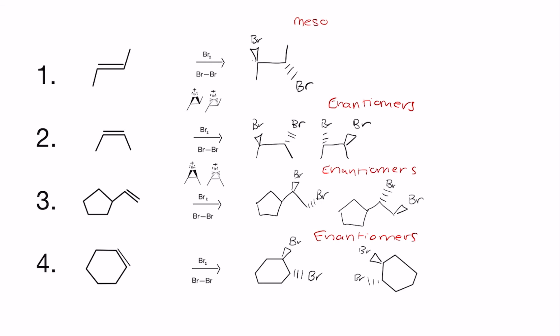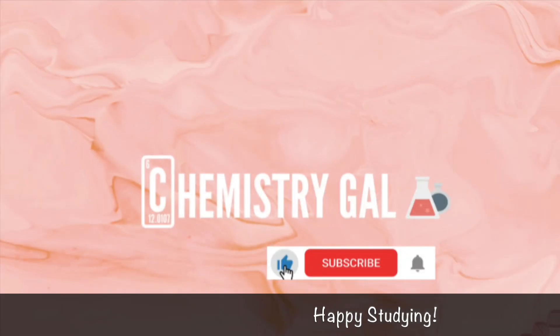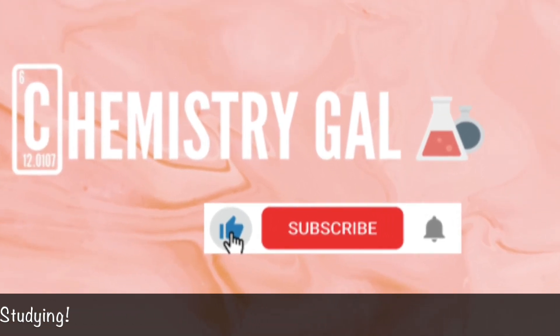Stay tuned for the next video if you want to find out why the products of number one were meso, and why the products of number two turned out to be enantiomers — I'll be providing an in-depth explanation. So that's it for this video. If you liked it, please leave a thumbs up and feel free to subscribe. Happy studying!